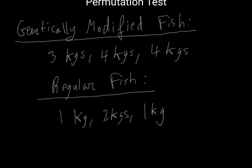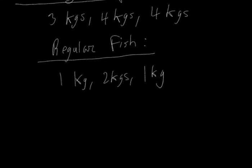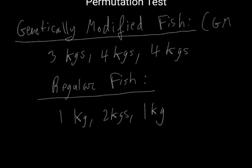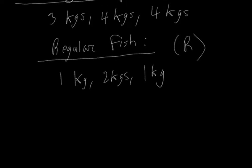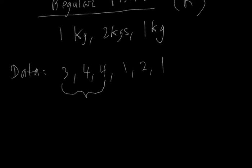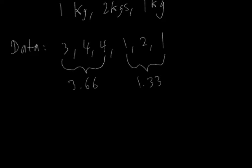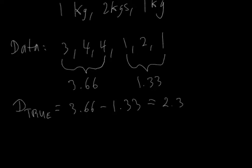The first thing we do is find the true difference of means. Let's call the genetically modified group GM and the regular fish group R. The mean of the GM group is 3.66, and the mean of the regular group is 1.33. So the true difference of means is 3.66 minus 1.33, which equals 2.33.